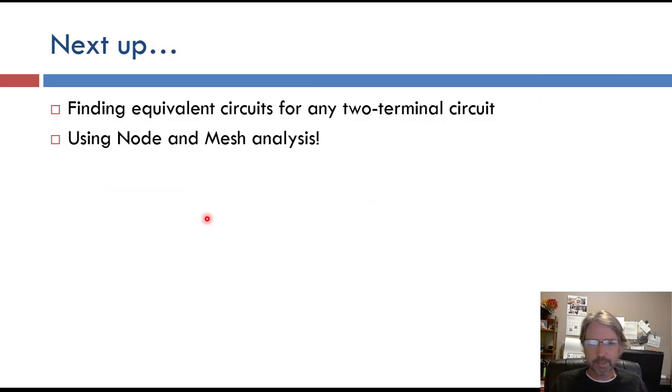So the next lecture will go into step-by-step process of finding these equivalent circuits for any two-terminal circuit. It's going to rely on our node and mesh analysis skills that we've been working on. So hopefully you are up to date on that. If not, you can review those videos. And it's a good review of node and mesh analysis, which is why we're doing it now. So I'll see you in the next video with some Thevenin and Norton equivalent circuit work.